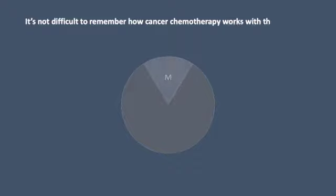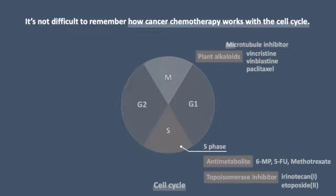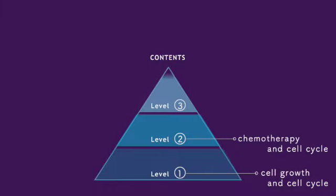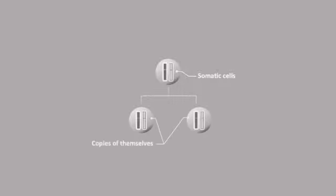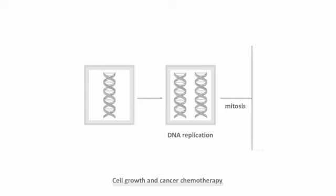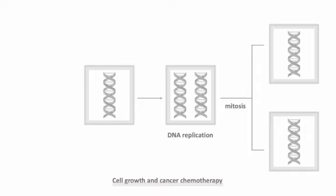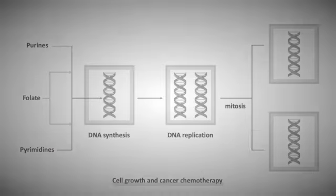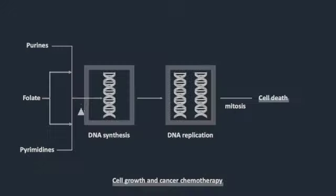It's not difficult to remember how cancer chemotherapy works with the cell cycle. Cells in our body make copies of themselves to grow and repair themselves. Each cell has DNA — first it replicates its DNA. For a cell to divide and share its DNA equally with daughter cells, making this DNA copy needs specific ingredients such as purines, pyrimidines, and folate. Block these vital processes so that cells cannot make their copies — that's where cancer medicine comes in.